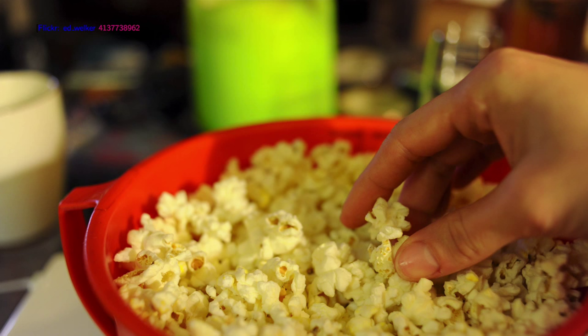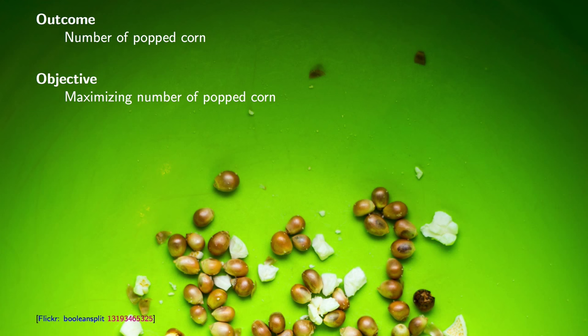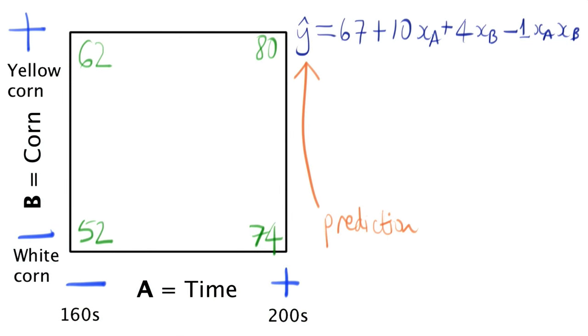Now in the videos in the prior module we were looking at popcorn, and I'm going to use that example again in this class. In the popcorn experiment, our objective was to maximize the amount of popcorn created. Our outcome variable was the number of popped kernels. Here is the cube plot and the corresponding predictive model that we created.